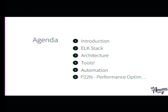We have a quite dense program today. I start with a little introduction, then we go over to the ELK stack. I cover the architecture of the ELK stack a little bit. Then I head over to tools, because there are many tools you can chain together, and if you get started with Elasticsearch, it's really a good start. There's also some automation I'll cover, and I invented the number name P22N for performance optimization, just because it's too bothersome to write it down every time.